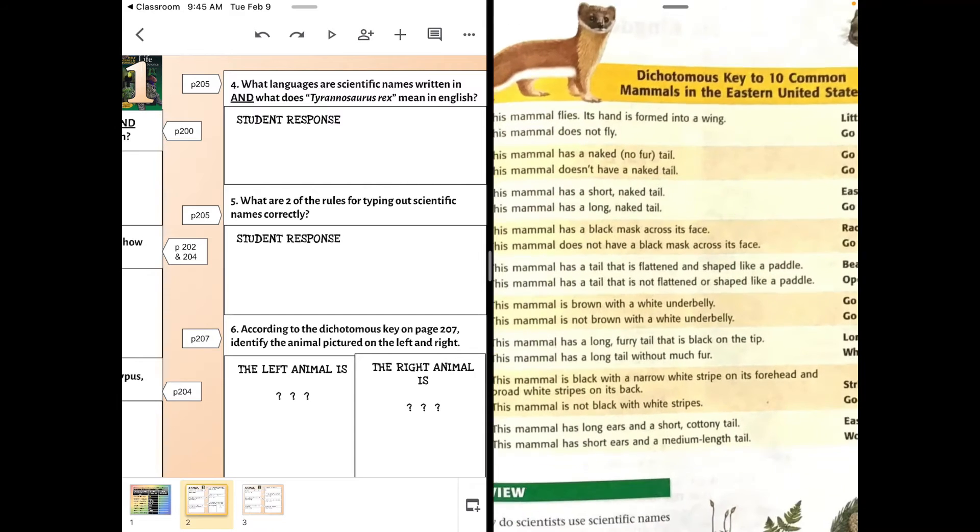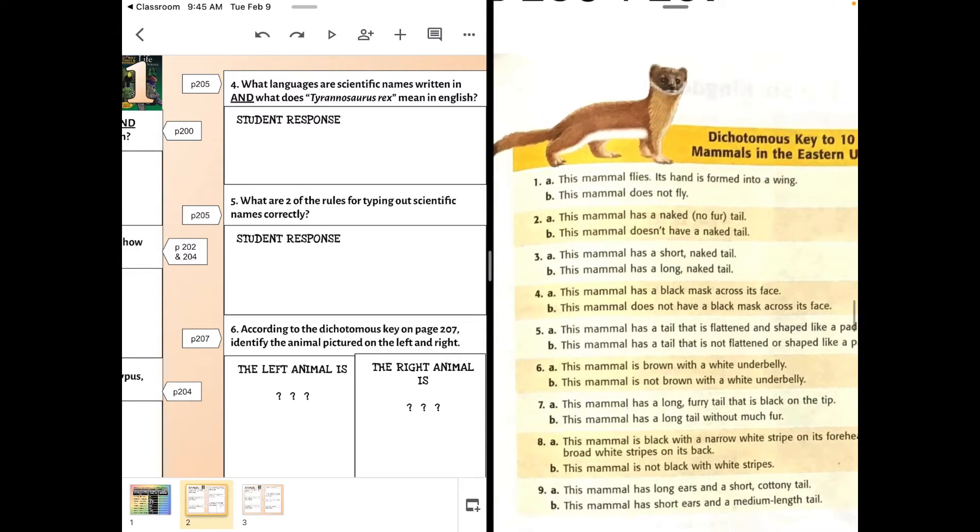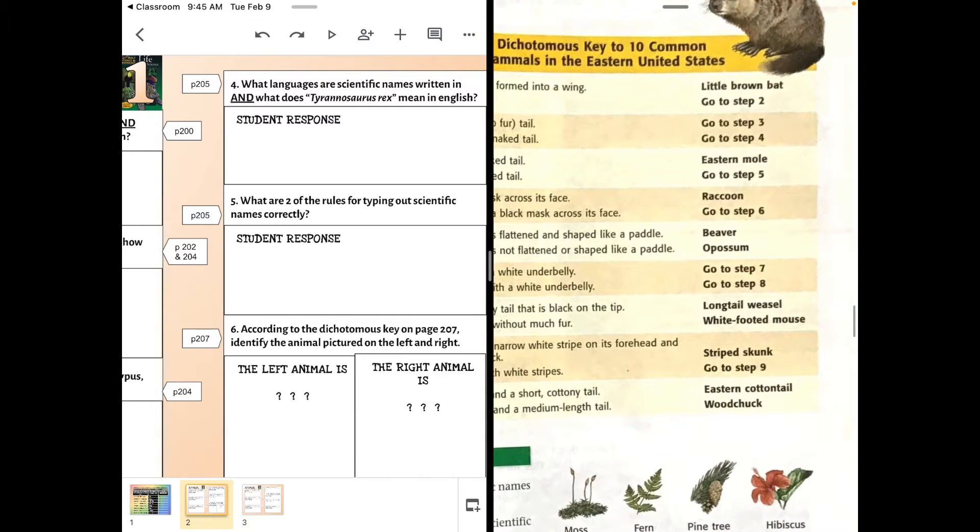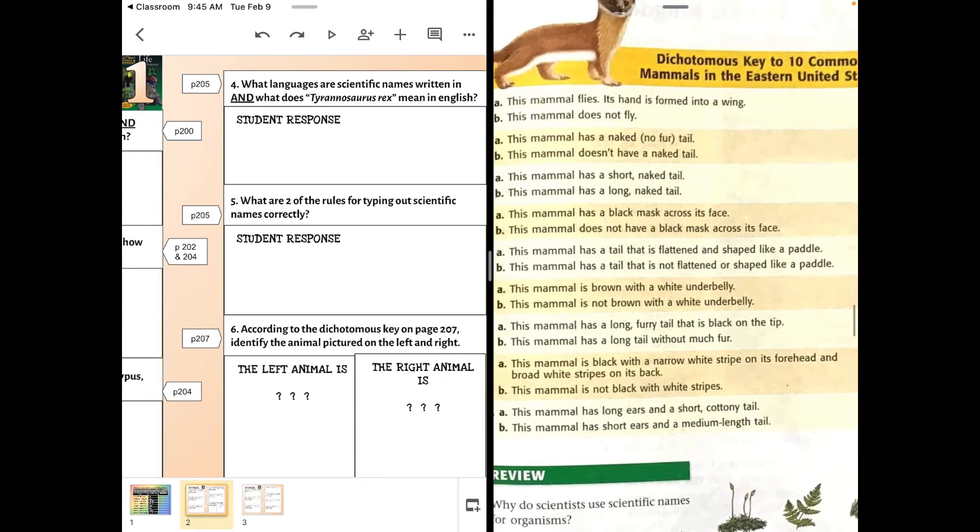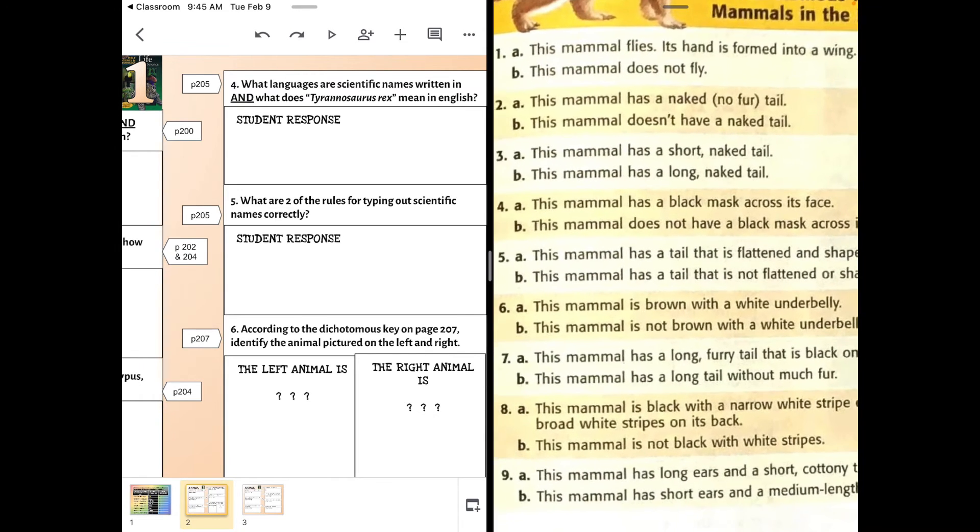So the first question: this mammal flies and its hands are formed into wings. And so if I look at this mammal on the left, it doesn't have wings for hands, so it's not a little brown bat, does not fly. Tells me to go to step two. Step two: this mammal has a naked tail with no fur on it, or this mammal does not have a naked tail. It clearly has a furred tail, not naked. We skip step three, we're told to go to step four.